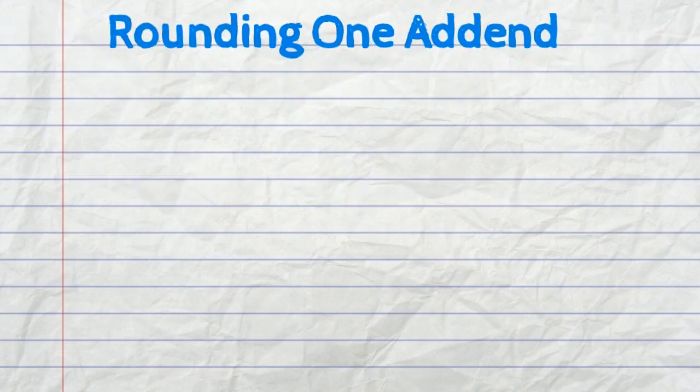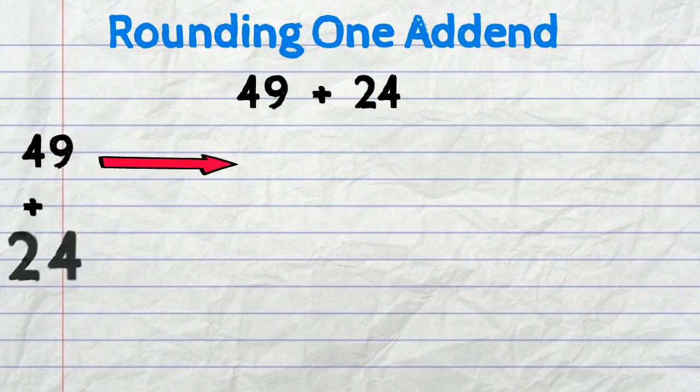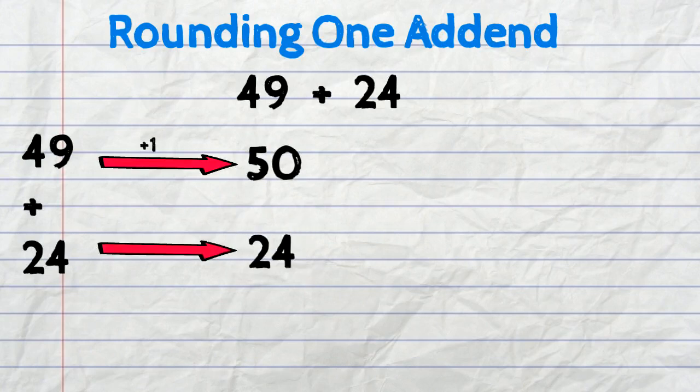Have a look at this example here where we're only going to round one addend. 49 plus 24. First, since 49 is so close to 50, we will add a 1 to round it to 50 but we'll leave 24 as it is.